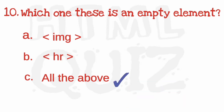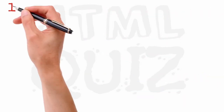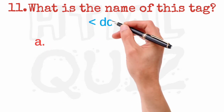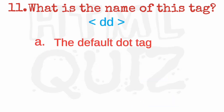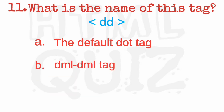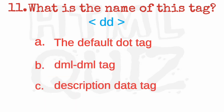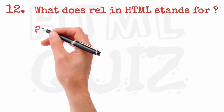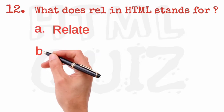All of the above is the right answer. What is the name of this tag: dd? The right answer is description data tag. What does rel in HTML stand for?